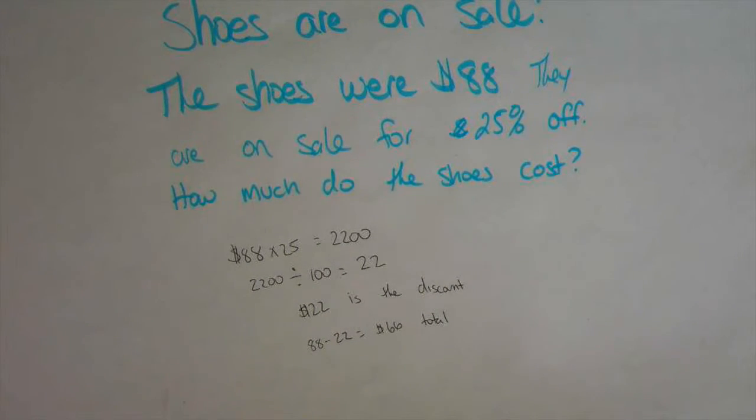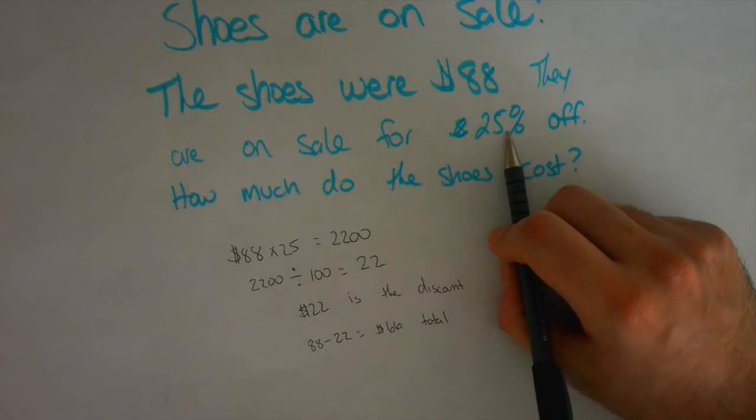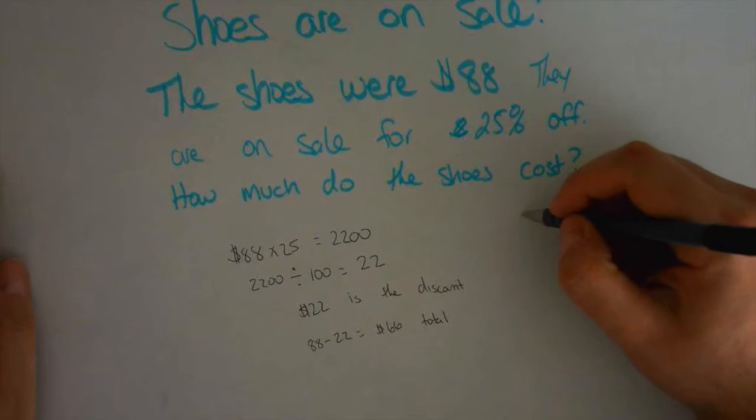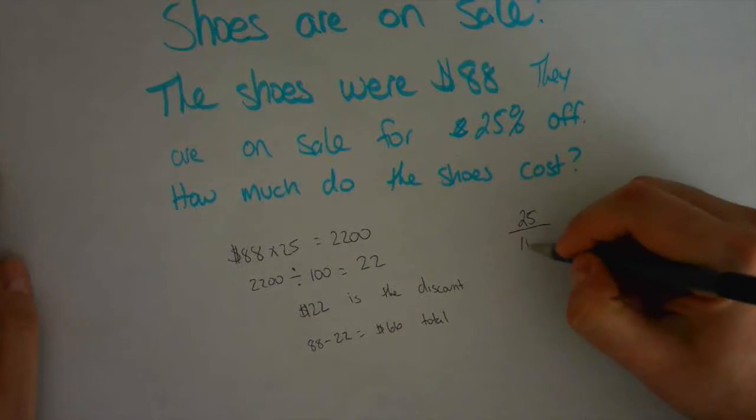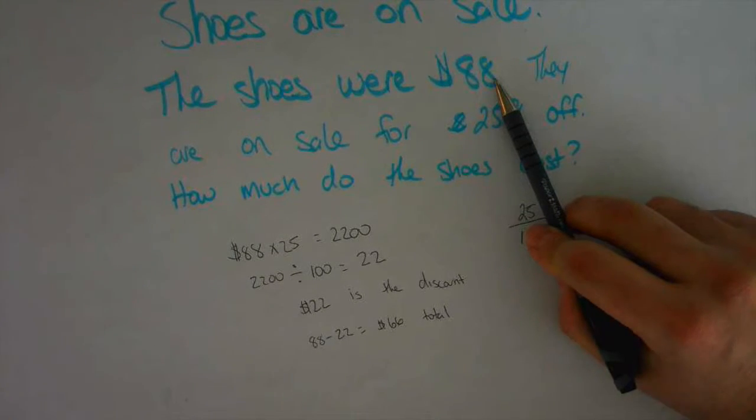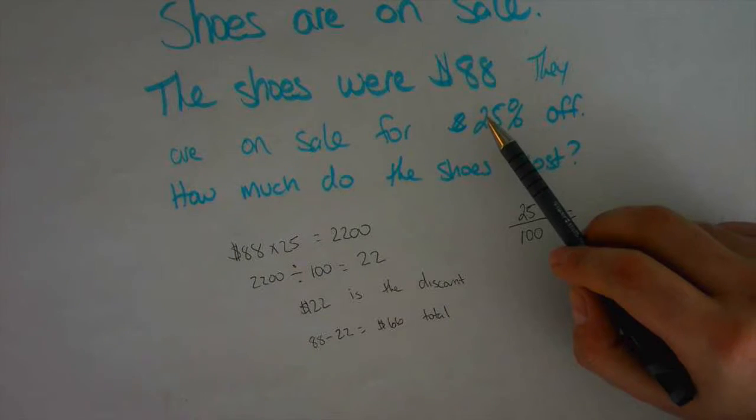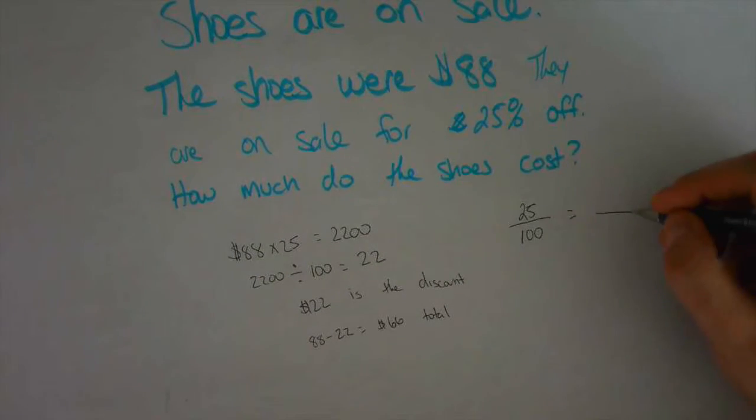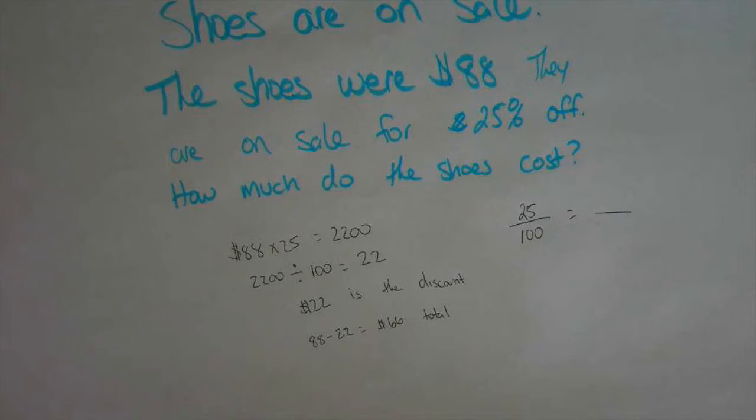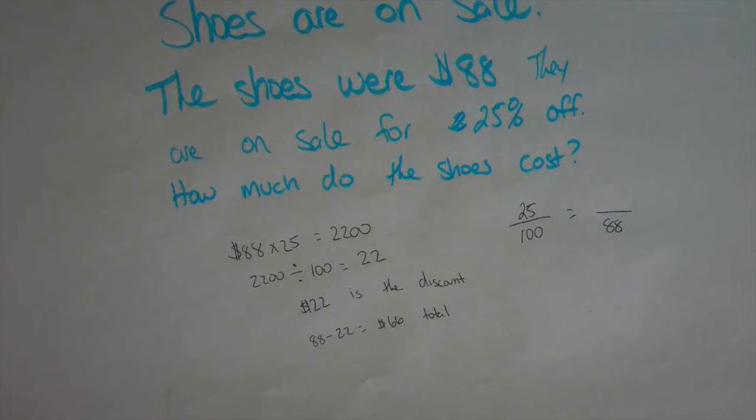So if we look at this in cross-multiplying, we know 25% is out of what? Percent is always out of 100. So that's a fraction that we have fully set in stone: $25 over $100. But what we don't know is the shoes. Now, we know that it's $88. Is that the total cost of the shoes or the discounted cost? It's the total. So where would the total go in a fraction? Is it going to be your numerator or is the total going to be your denominator? The total is always the denominator.